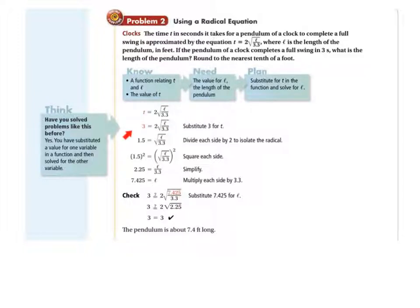We know the time t is 3: 3 equals 2 times the square root of l over 3.3. Start by dividing off the 2. 1.5 equals the square root of l over 3.3. Square both sides to undo the square root: 2.25 equals l over 3.3. Multiply off that 3.3, and l is 7.425. Now check that — plug that back in. 7.425 divided by 3.3 is 2.25, take the square root times 2, and using your calculator that is indeed 3. So the pendulum is about 7.4 feet long.